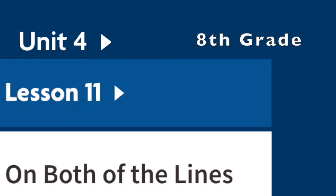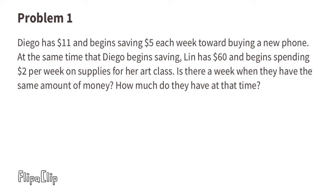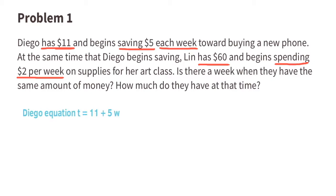8th grade, Unit 4, Lesson 11. Problem number 1. Diego has $11 and begins saving $5 each week towards buying a new phone. At the same time that Diego begins saving, Lynn has $60 and begins spending $2 per week on supplies for her art class. Is there a week when they have the same amount of money? How much do they have at that same time? We can start by writing an equation for Diego.